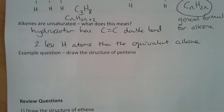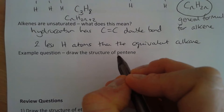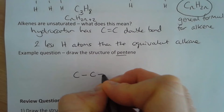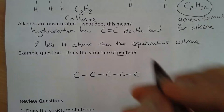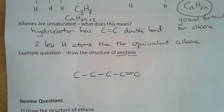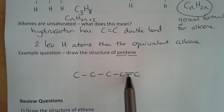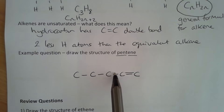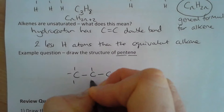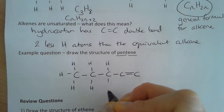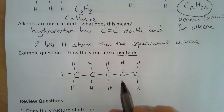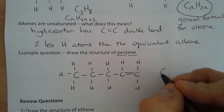I'm going to work through an example: draw the structure of pentene. 'Pent' tells us there are five carbon atoms, so I'll start by drawing five carbon atoms. The '-ene' means it's an alkene, so there will be a double bond between two carbon atoms — for now I'll always put it on the last two. Then I need to put in all the hydrogens, remembering that there's a hydrogen missing on each of the double-bonded carbons.